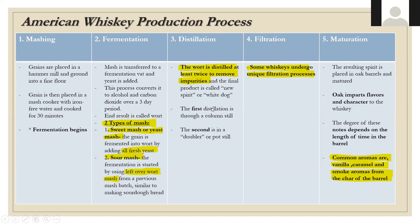The first distillation is through the column still typically, and the second is through a doubler or pot still. Some whiskeys will undergo unique filtration processes. Then comes maturation, where the resulting spirit is placed in oak. A large part of the flavors and characteristics of whiskey come from this maturation, whether done in new American oak or finished in other barrel vessels. The degree of these notes depends on the length of time spent in barrels.